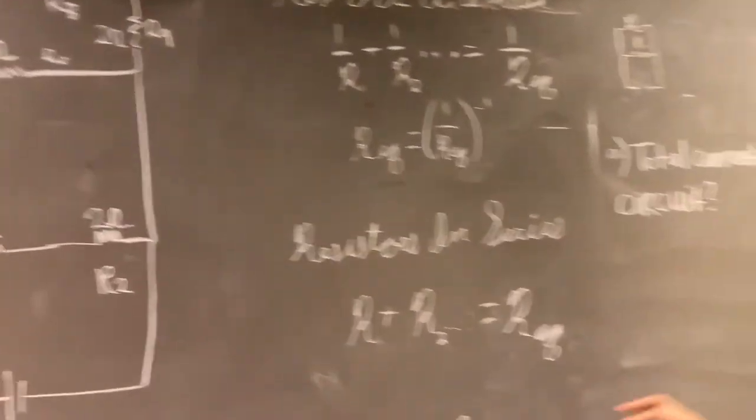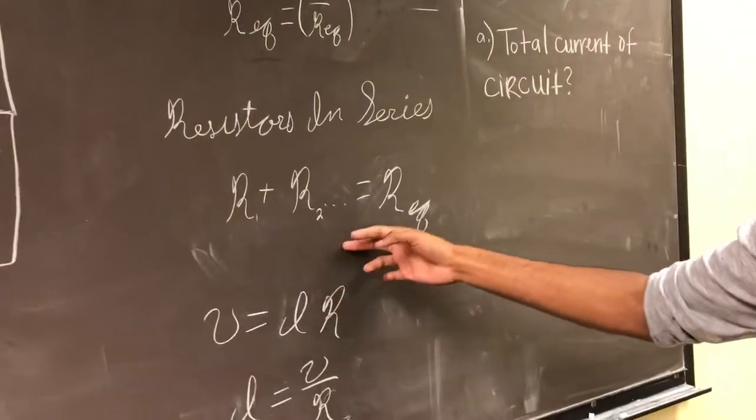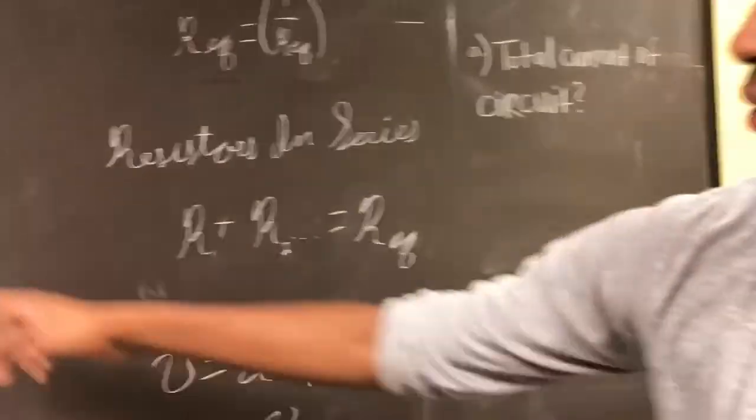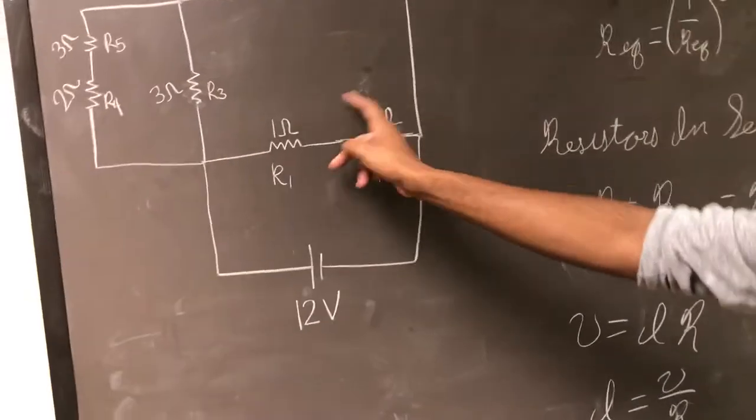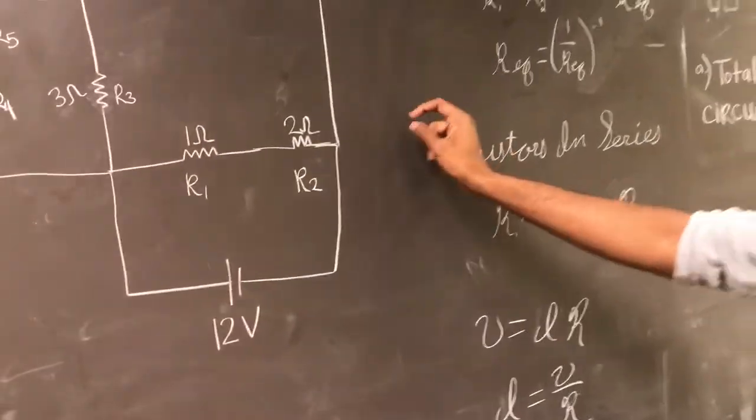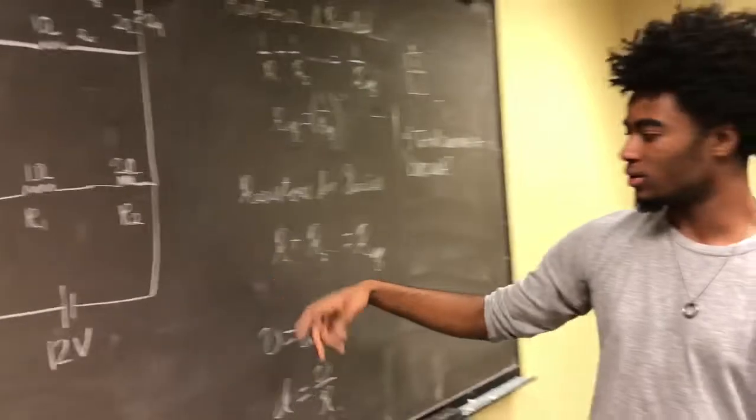And for series circuits, you just simply add the resistors together, so if it was something like this, you just add 1 and 2 together, and that will get you 3 ohms, and then that will condense the circuit down to R1 and R2.